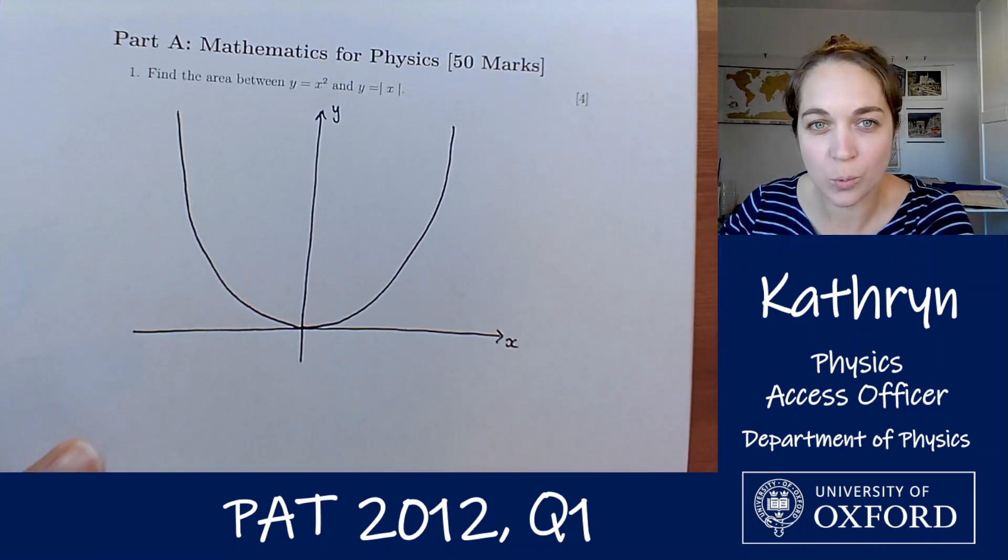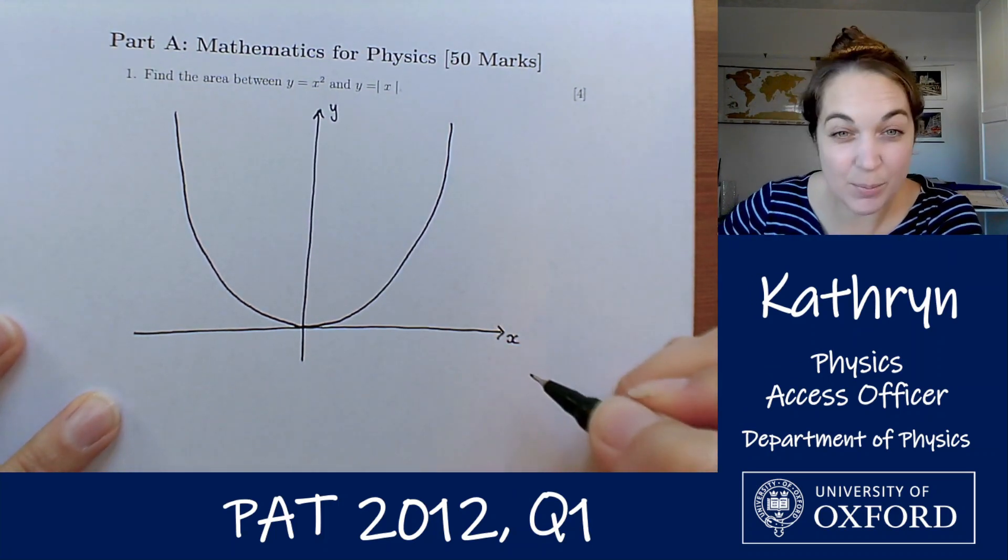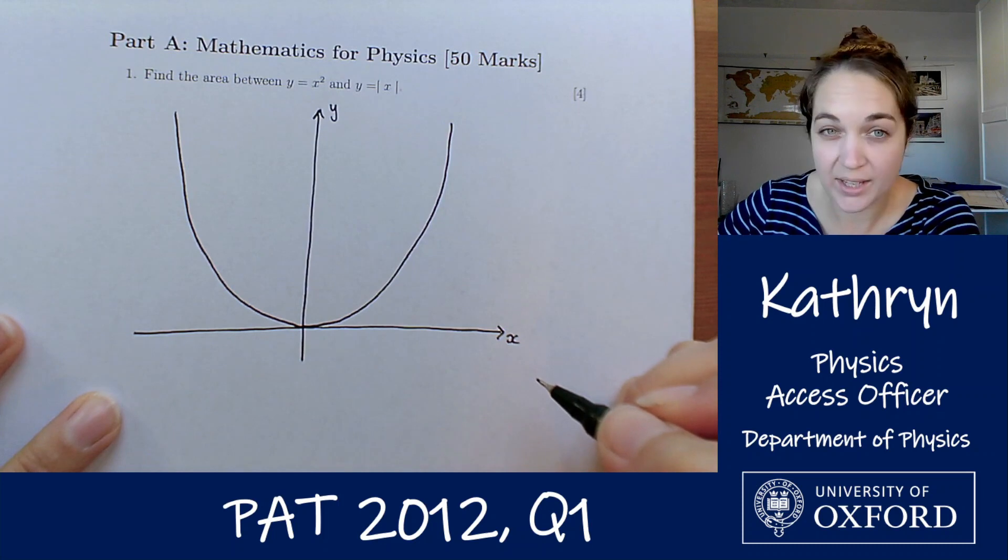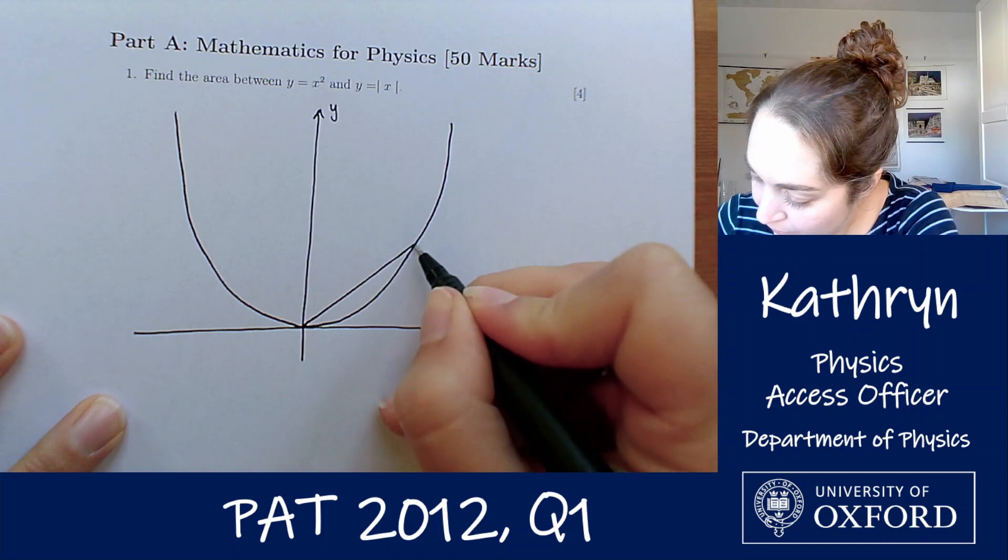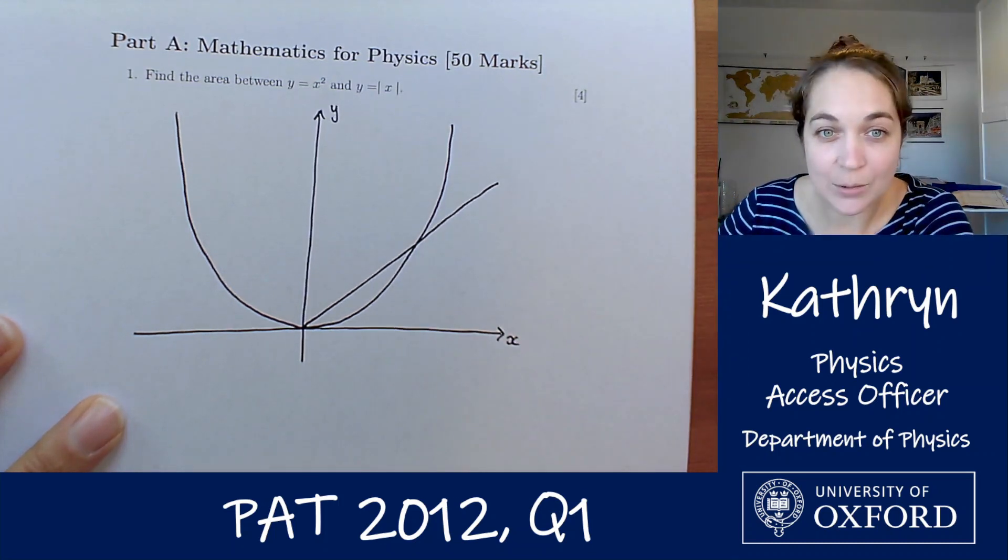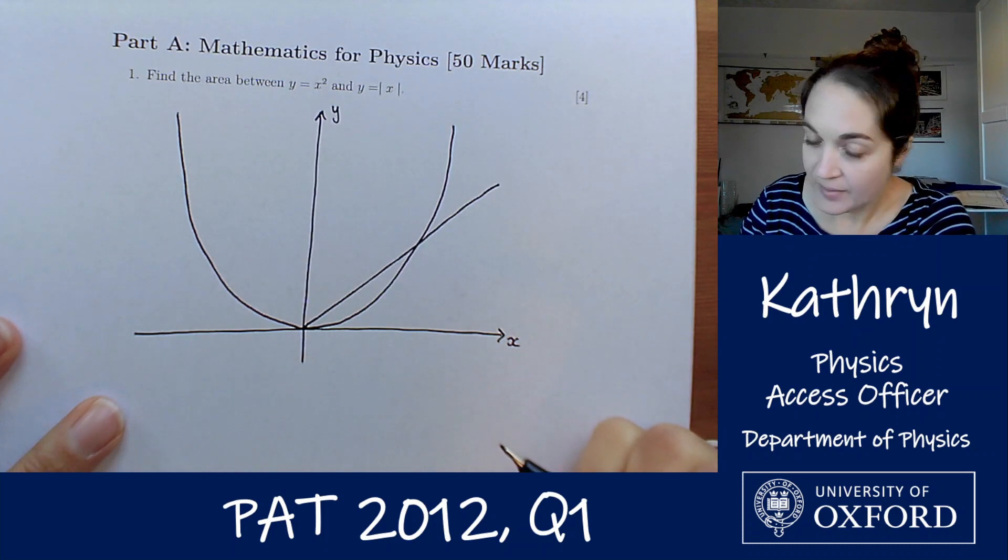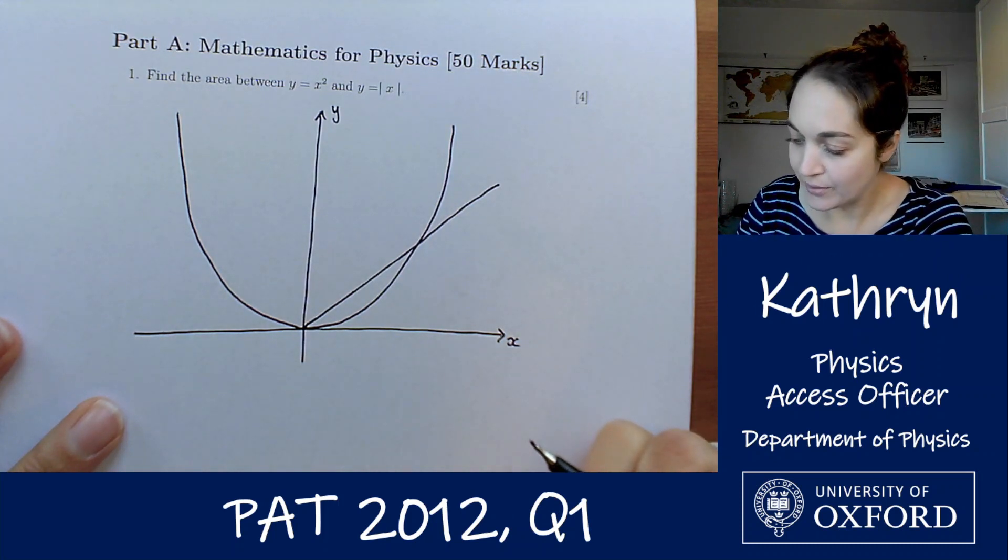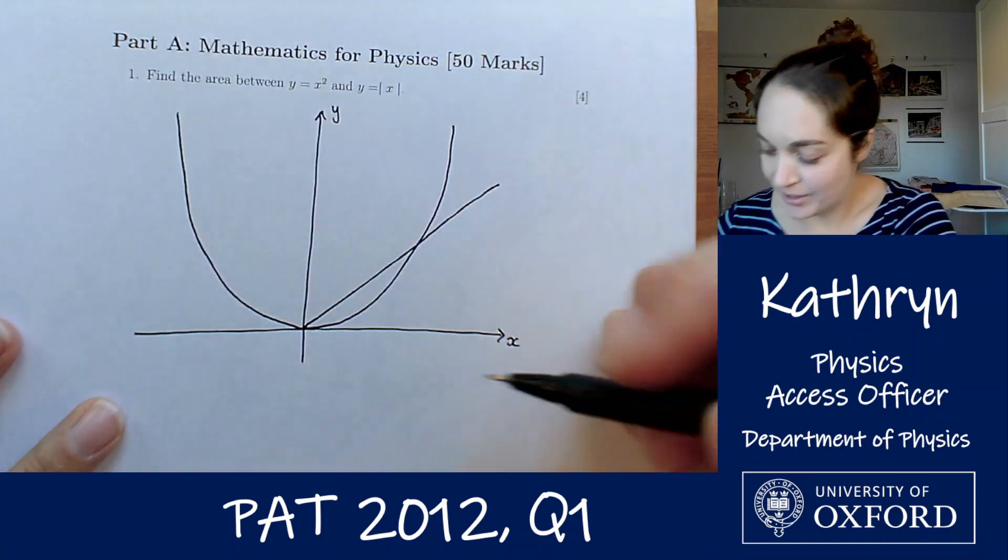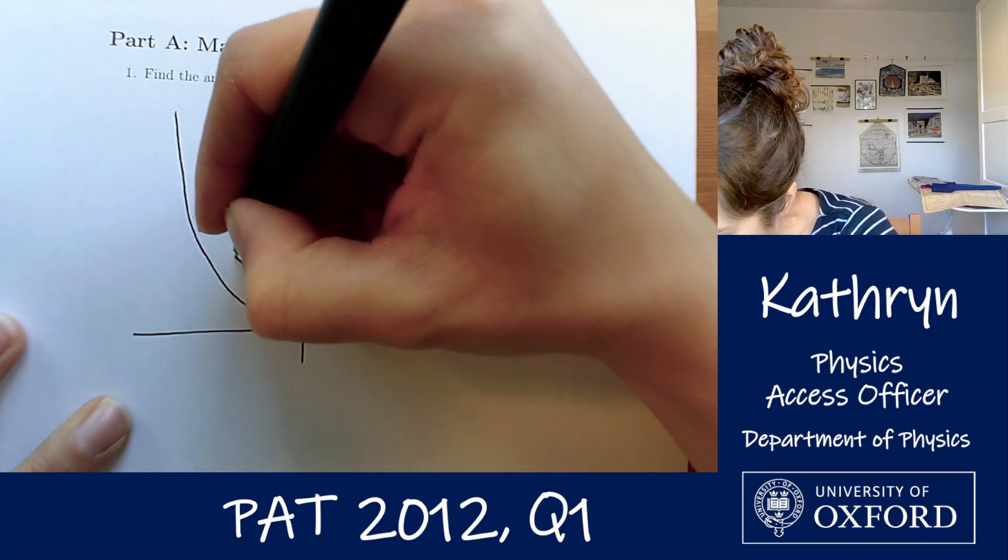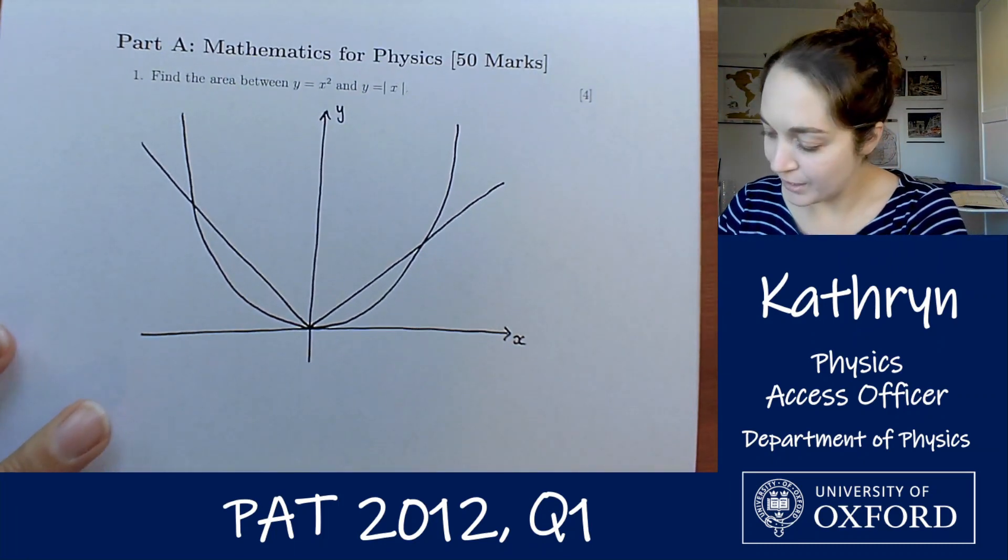And then we've got this y equals mod x, so again for x is positive, that's straightforward, that's just y equals x, so straight line gradient of 1, going to come out something like that. And when x is negative, it's essentially the opposite, so it's y equals the modulus of negative x, i.e. it's the same straight line. So something like that, hopefully a little bit more symmetric maybe.